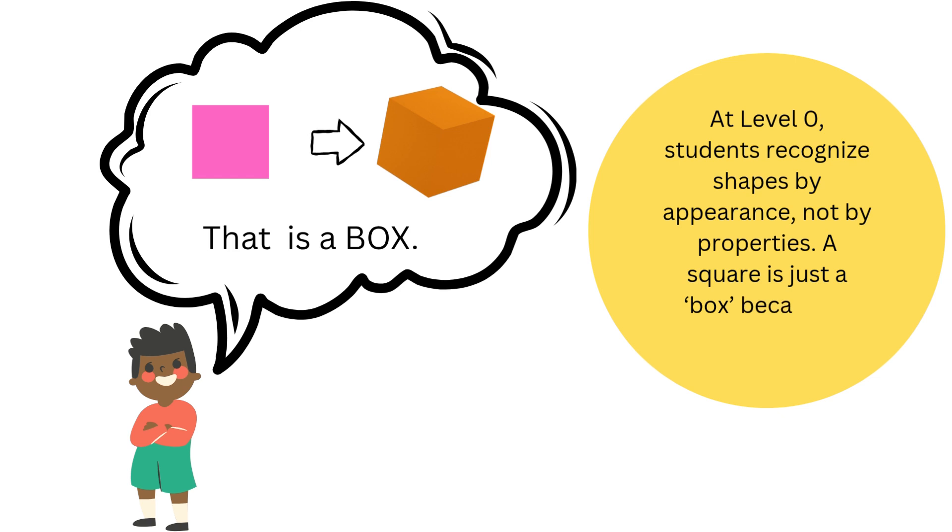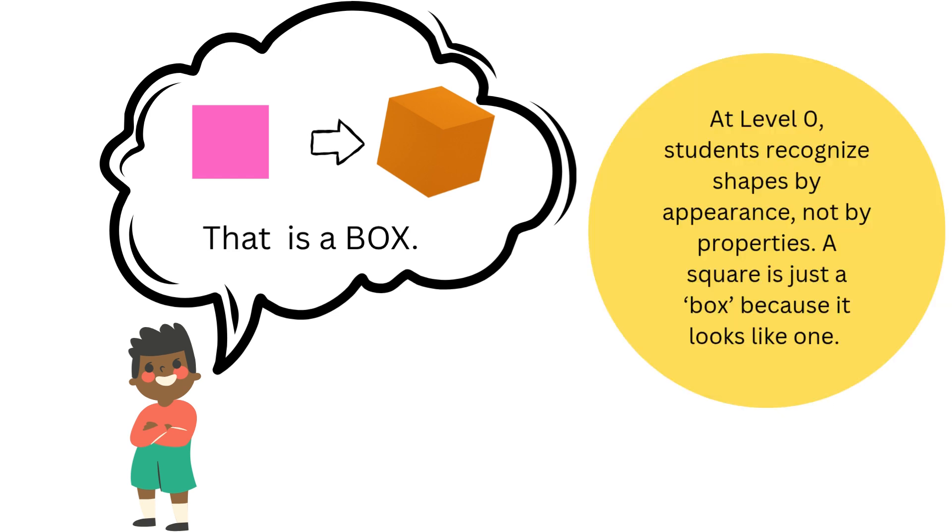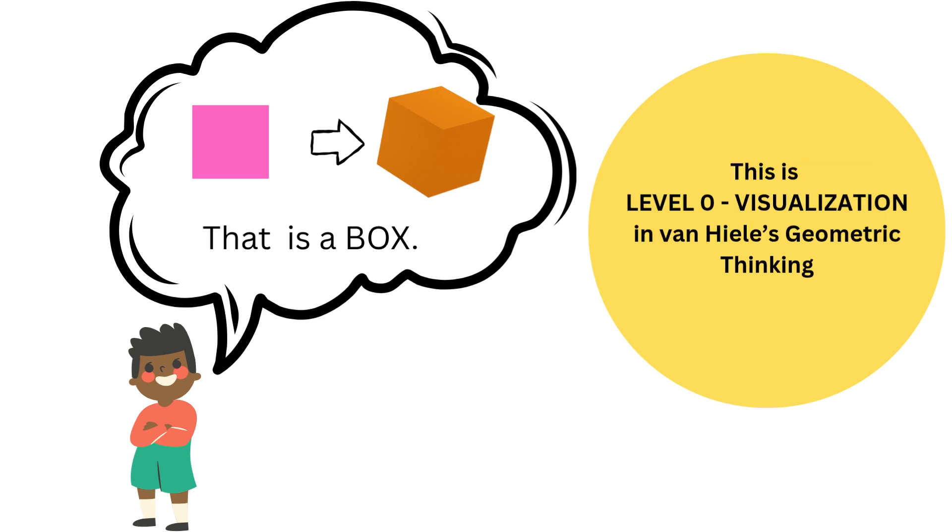At Level 0, students recognize shapes by appearance, not by properties. A square is just a box because it looks like one. This is Level 0—Visualization in Van Hiele's Geometric Thinking.